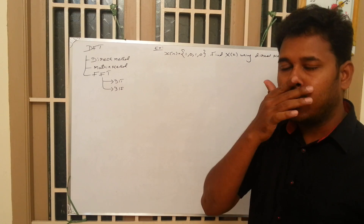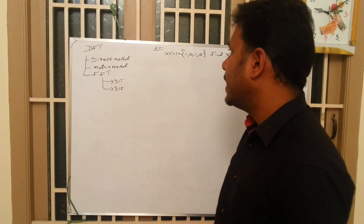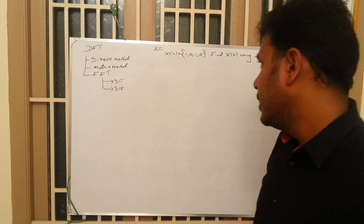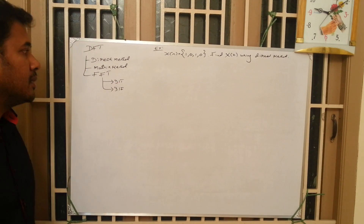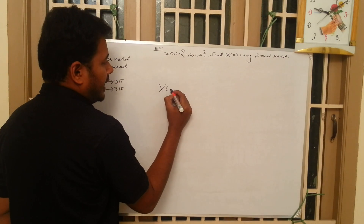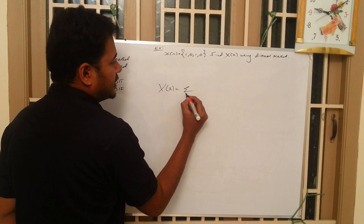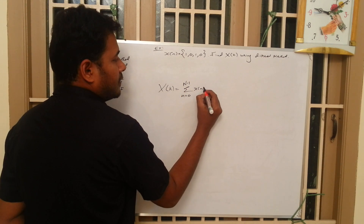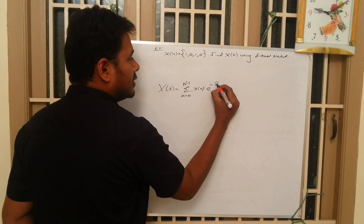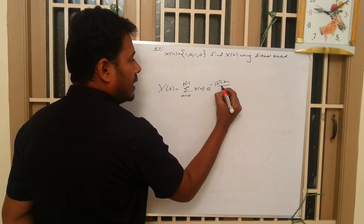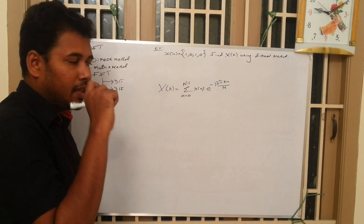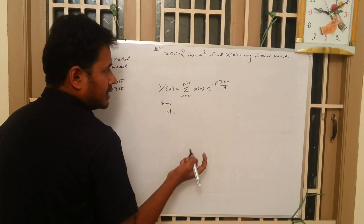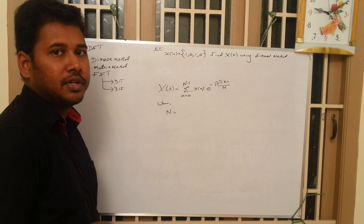First, let us see how to solve any problem using the direct method. In the direct method, we have a formula to find X(k). The DFT formula is given by X(k) = summation from n=0 to N-1 of x(n) into e power minus j2πkn/N, where capital N is equal to the number of elements given in the sequence.